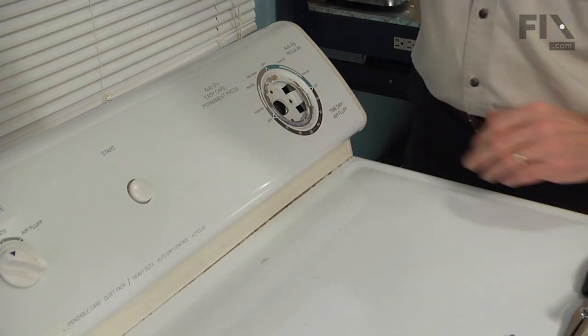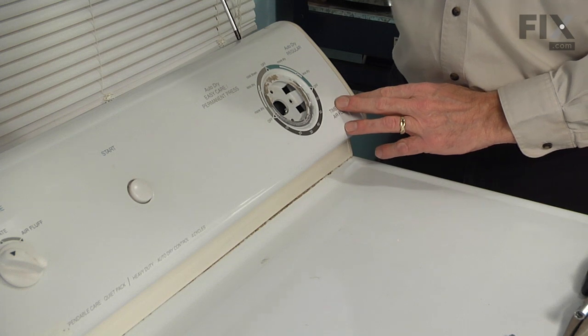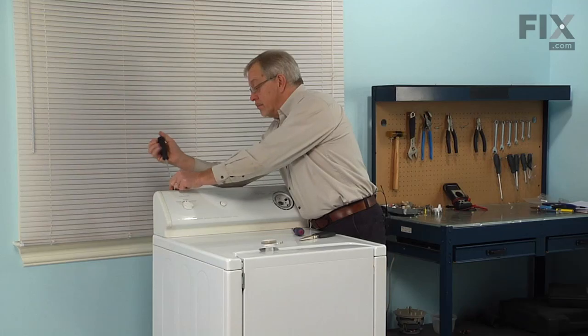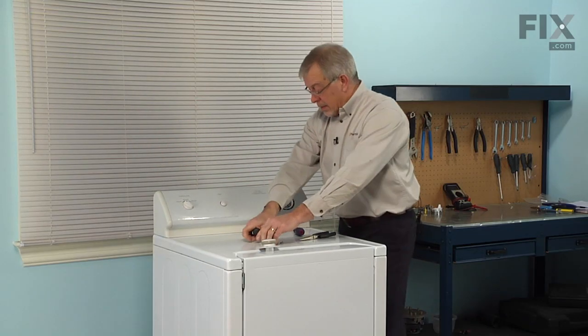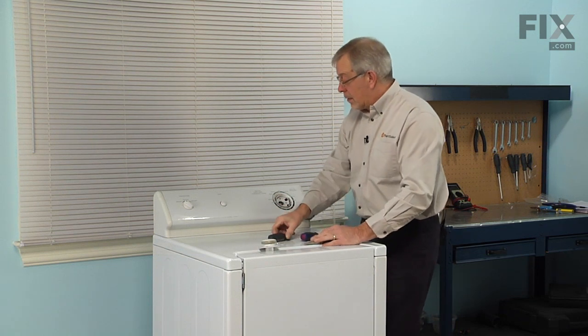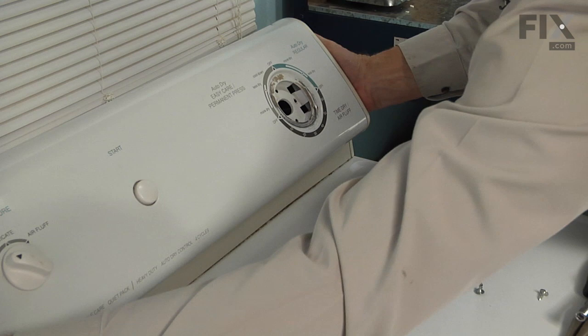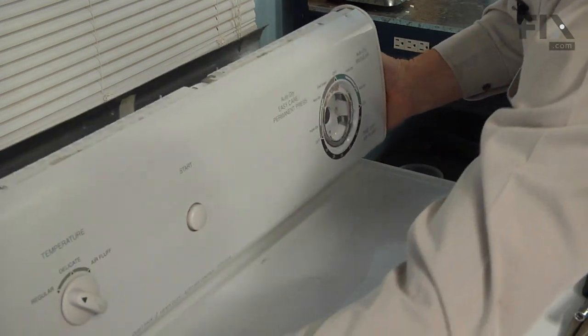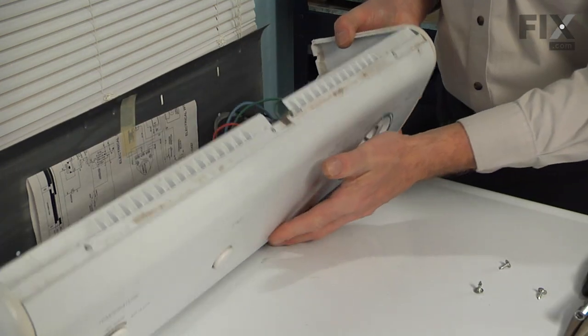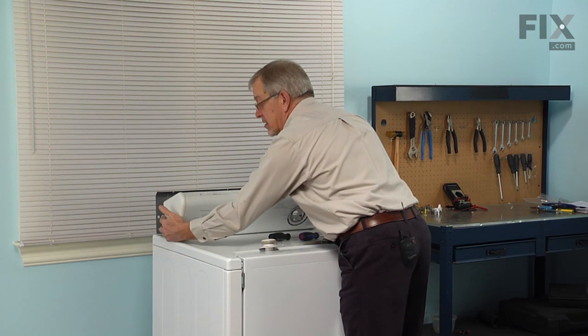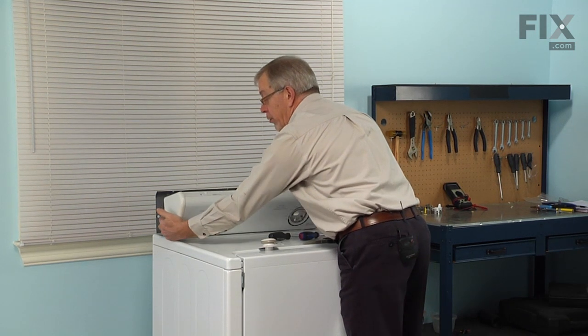Then next, we're going to remove three Phillips screws from across the top of the console. Then we'll grasp both sides of that console. We're just going to release the feet on the bottom and just push back slightly on that console and then roll it forward.